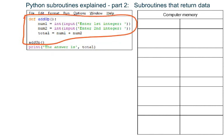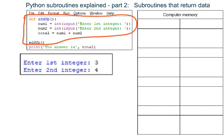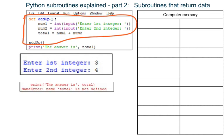The first part of the program works correctly, but then the program crashes. This line of the error message tells us the problem is in the line where we ask Python to print out what is stored in variable Total.